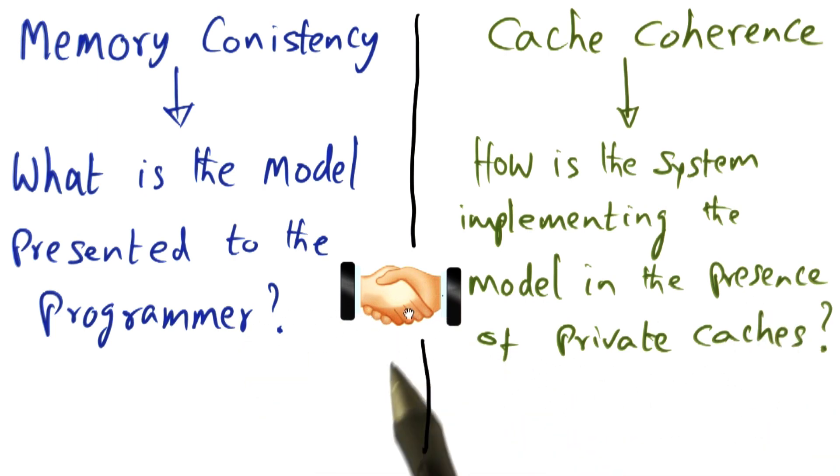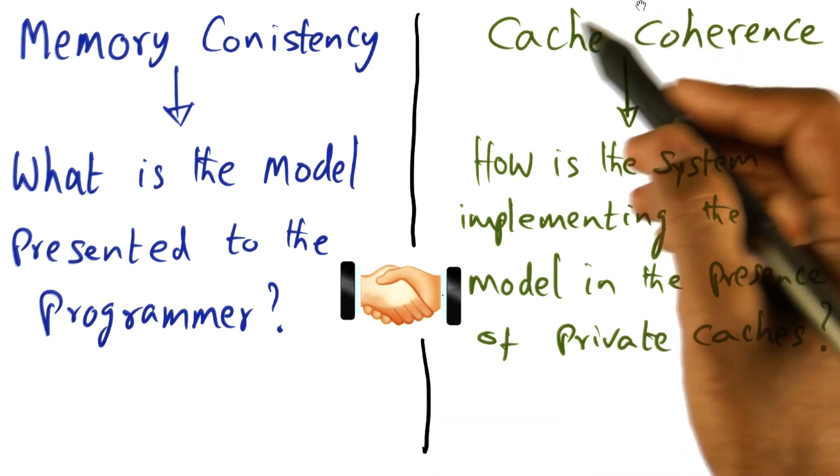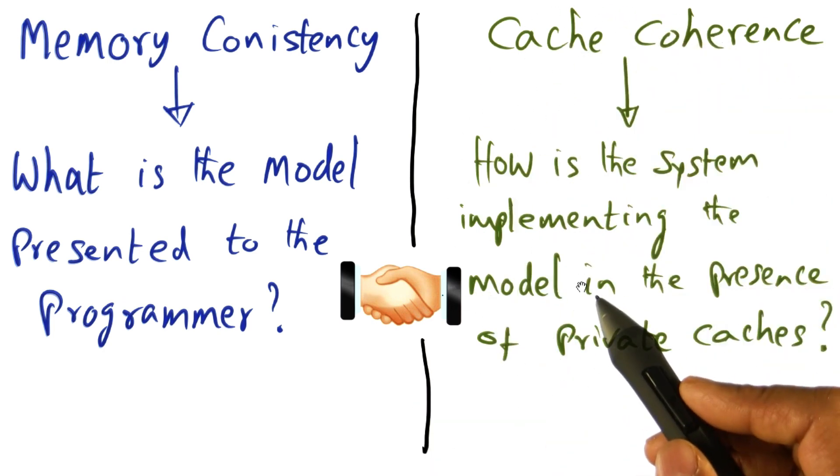So this is a handshake, a partnership between hardware and software, between the application programmer and the system in order to make sure that the consistency model is actually implemented correctly by the cache coherence mechanism that is ingrained in the system.